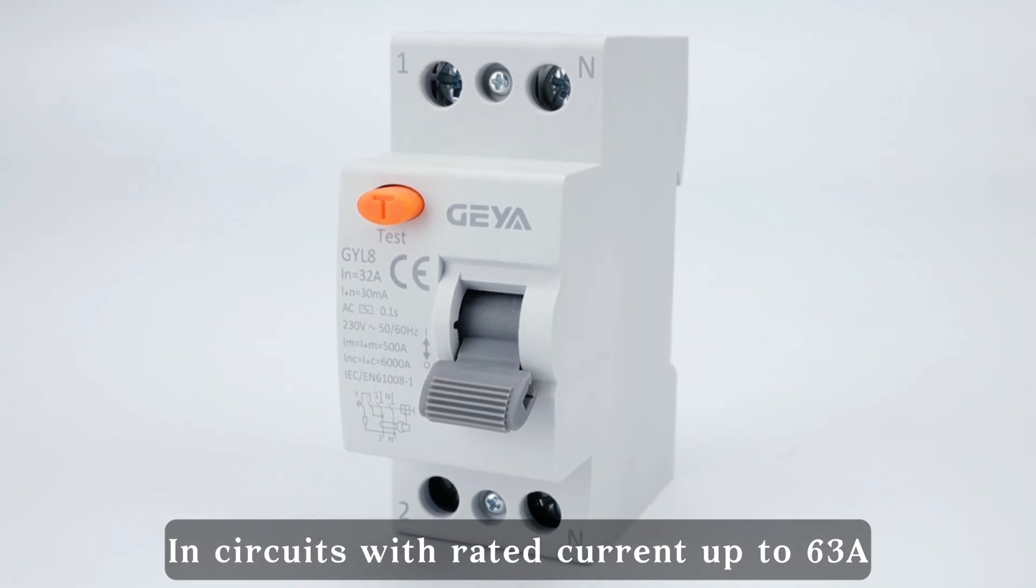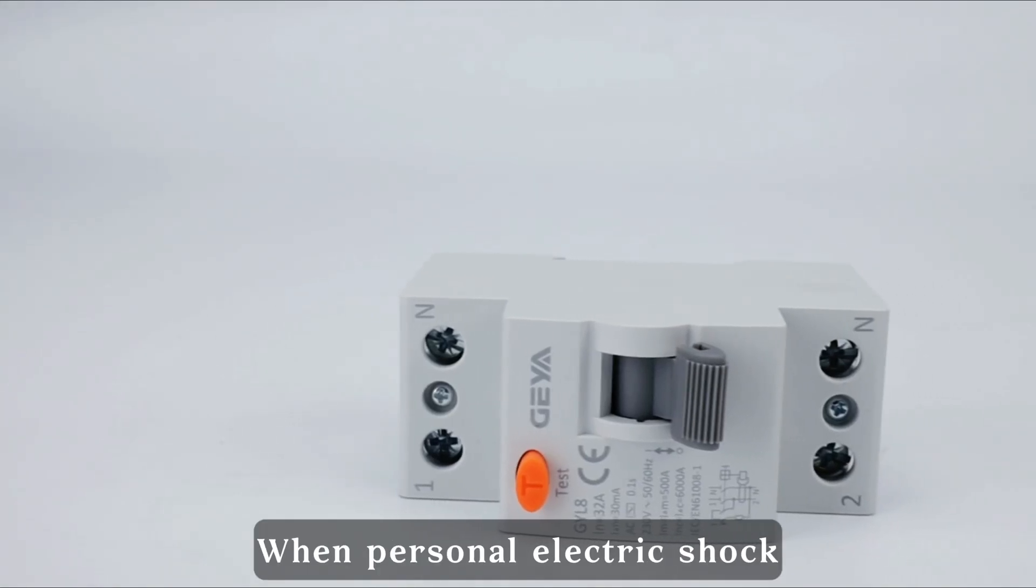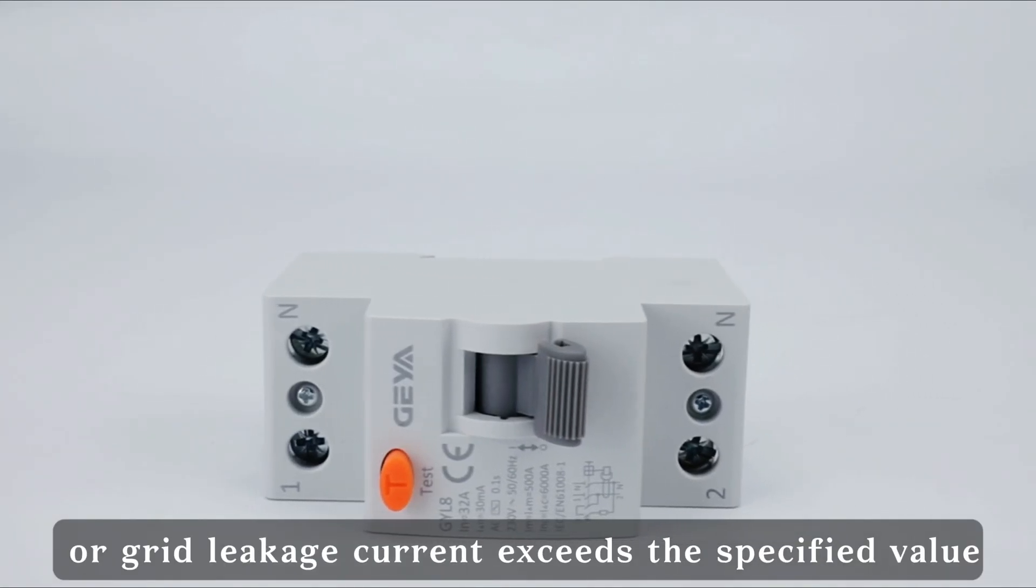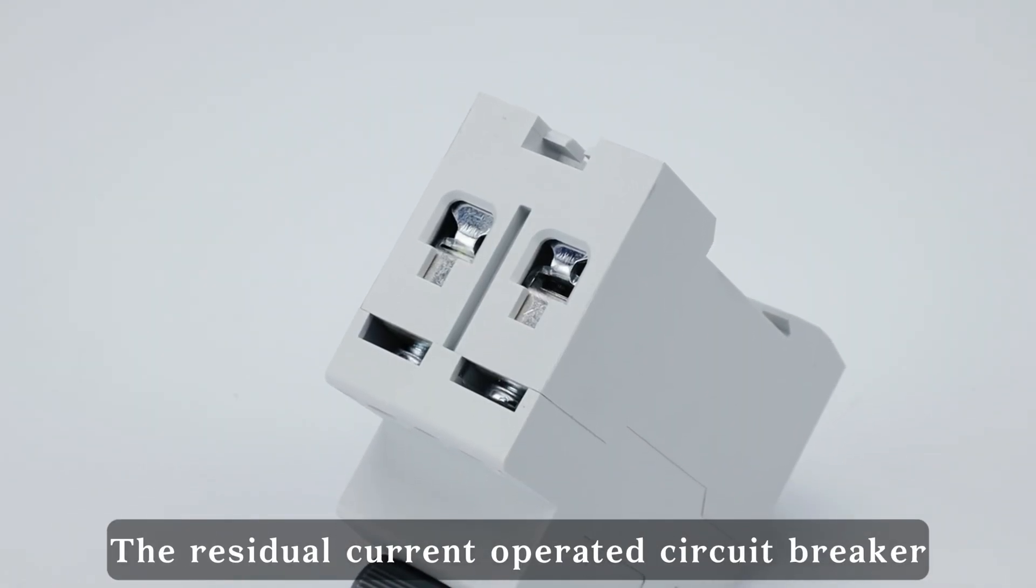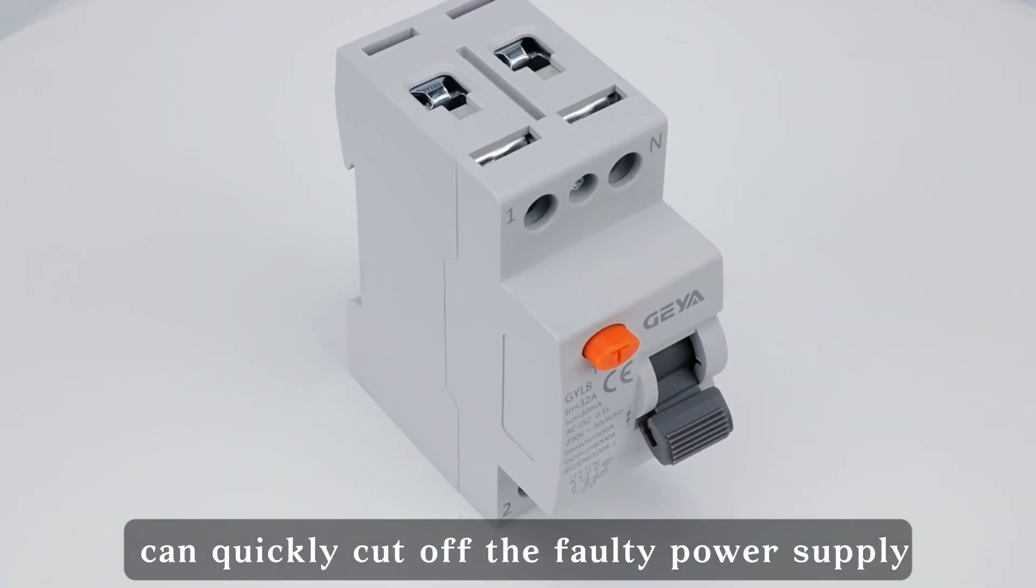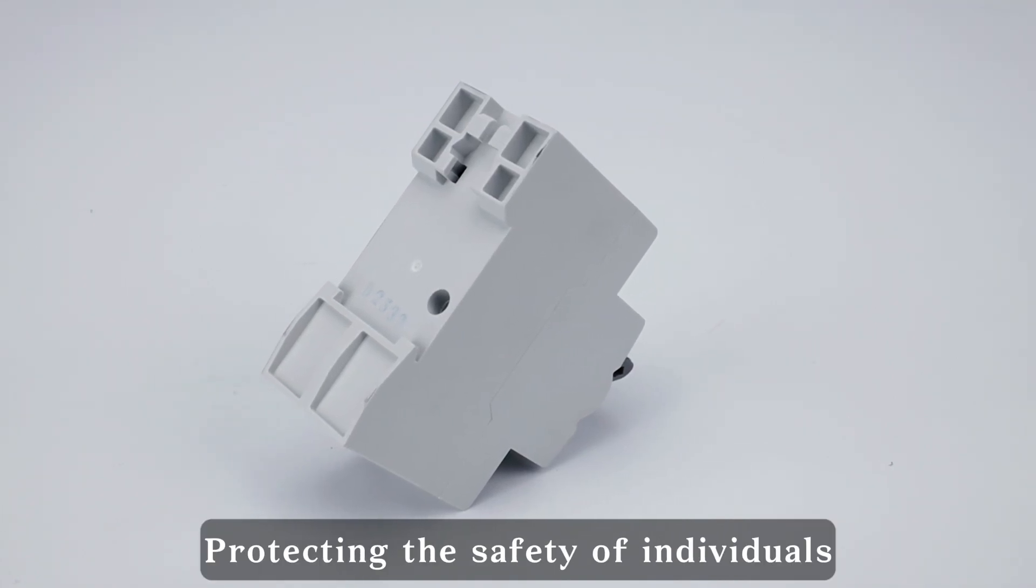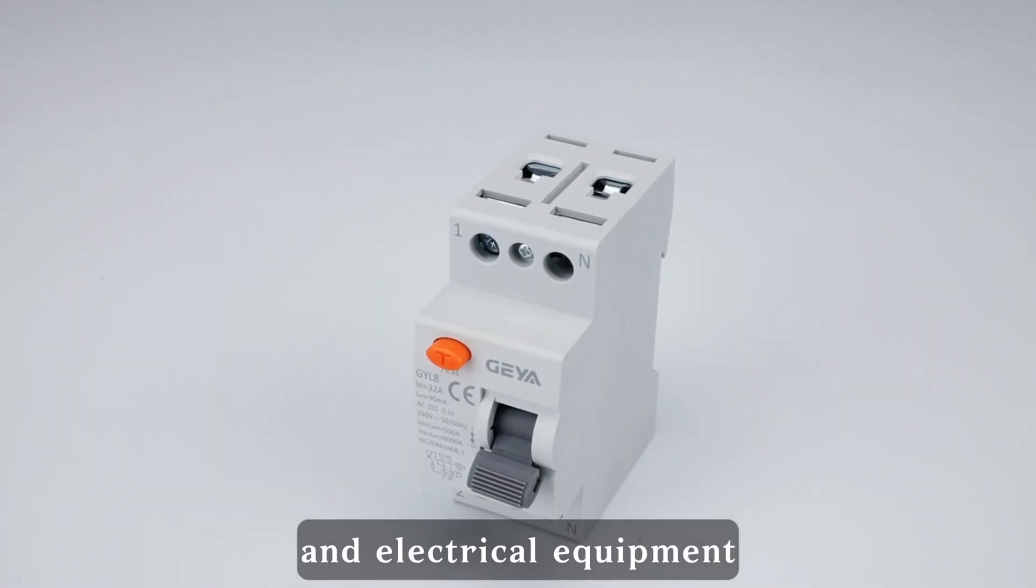In circuits with rated current up to 63A, when personal electric shock or grid leakage current exceeds the specified value, the residual current operated circuit breaker can quickly cut off the faulty power supply in a very short time, protecting the safety of individuals and electrical equipment.